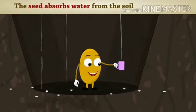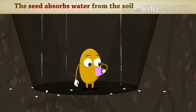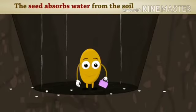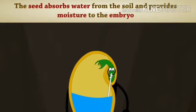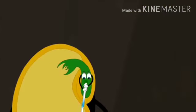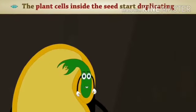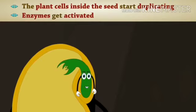The seed absorbs water from the soil and provides moisture to the embryo. The plant cells inside the seed start duplicating, enzymes get activated.